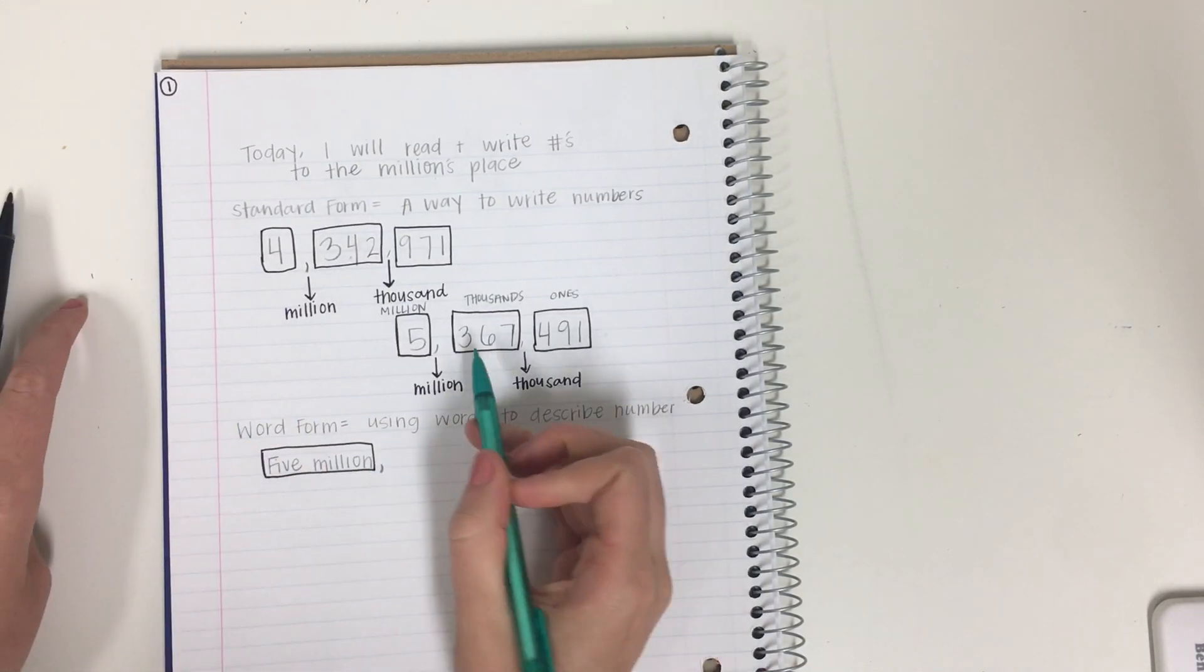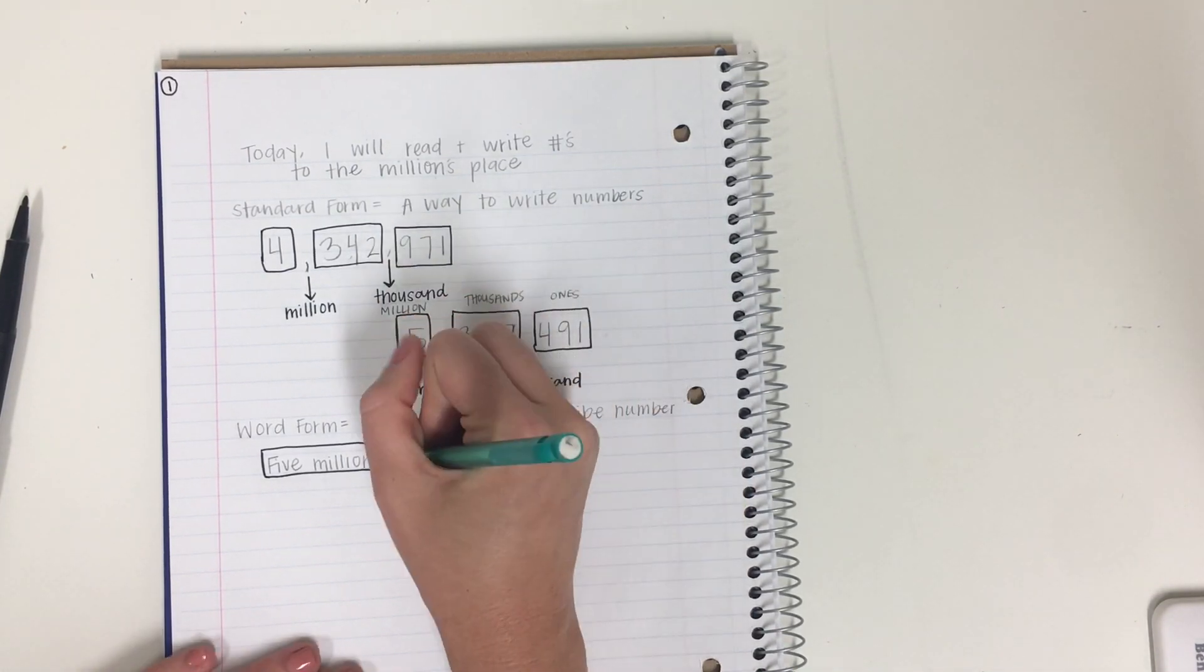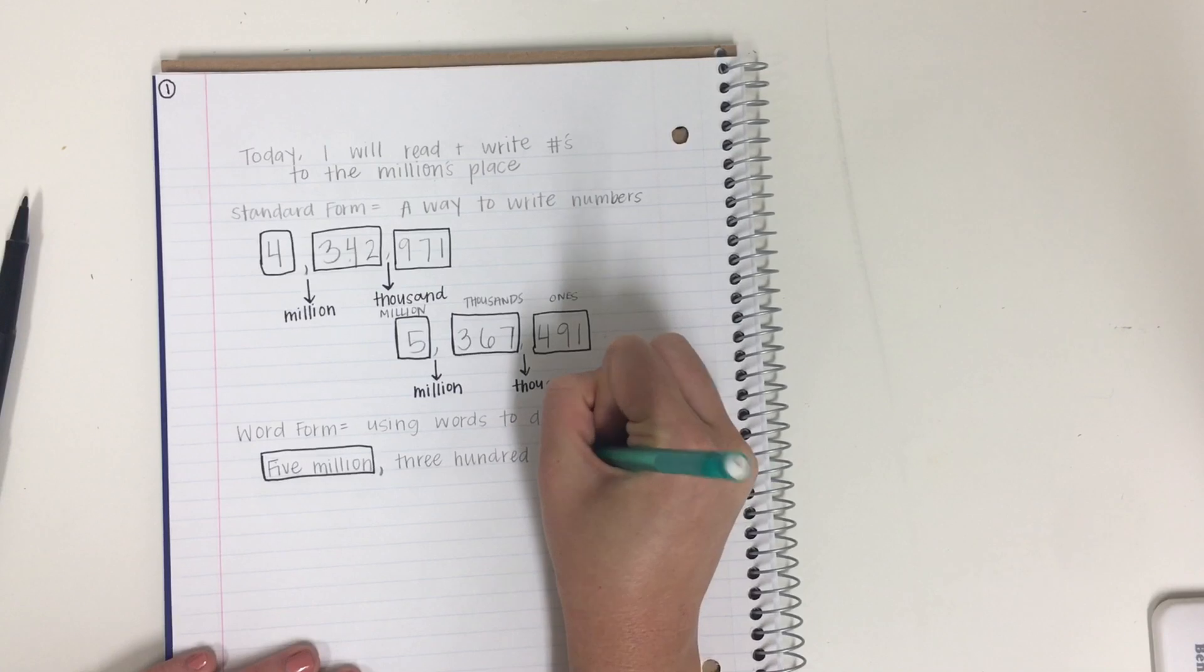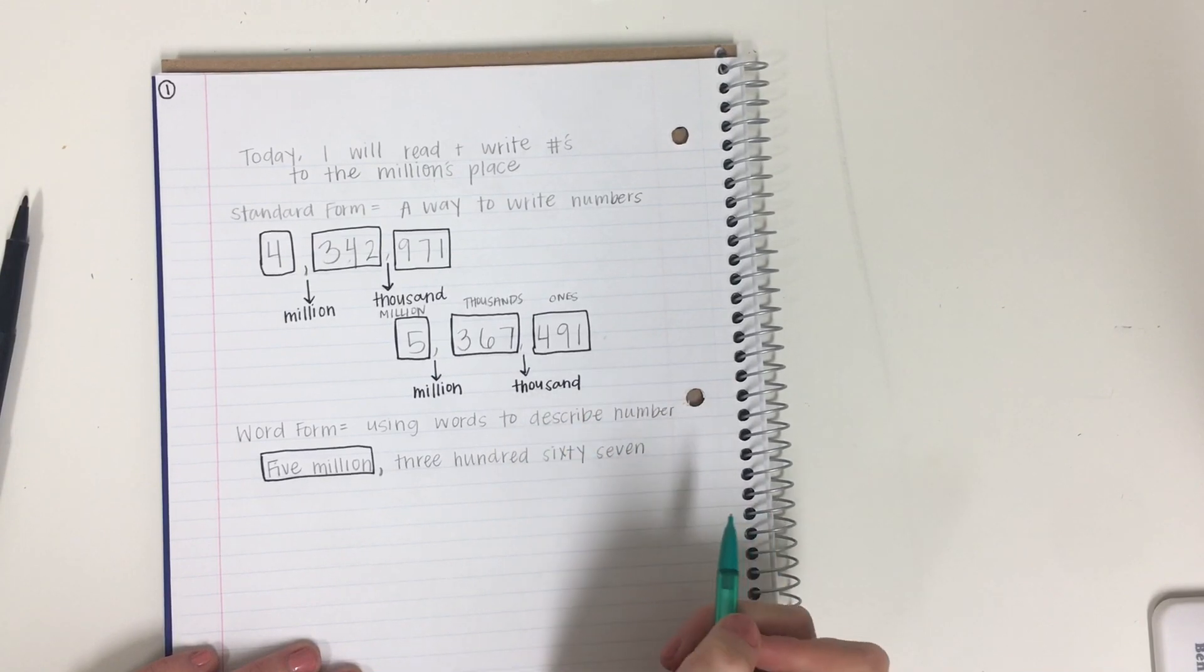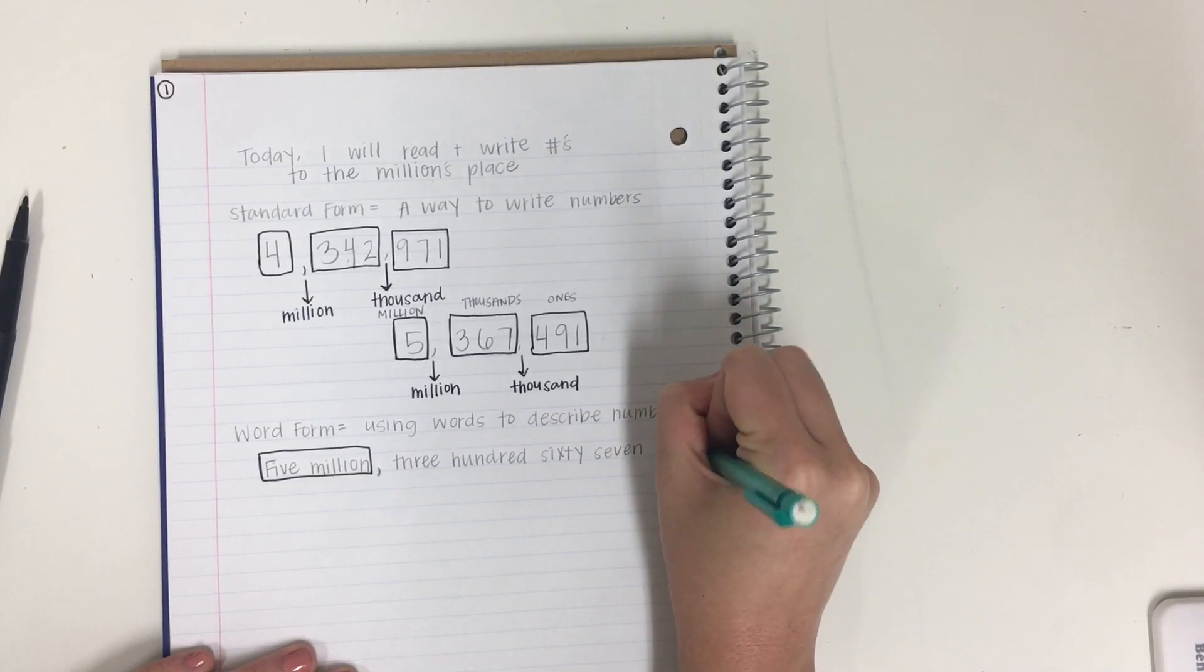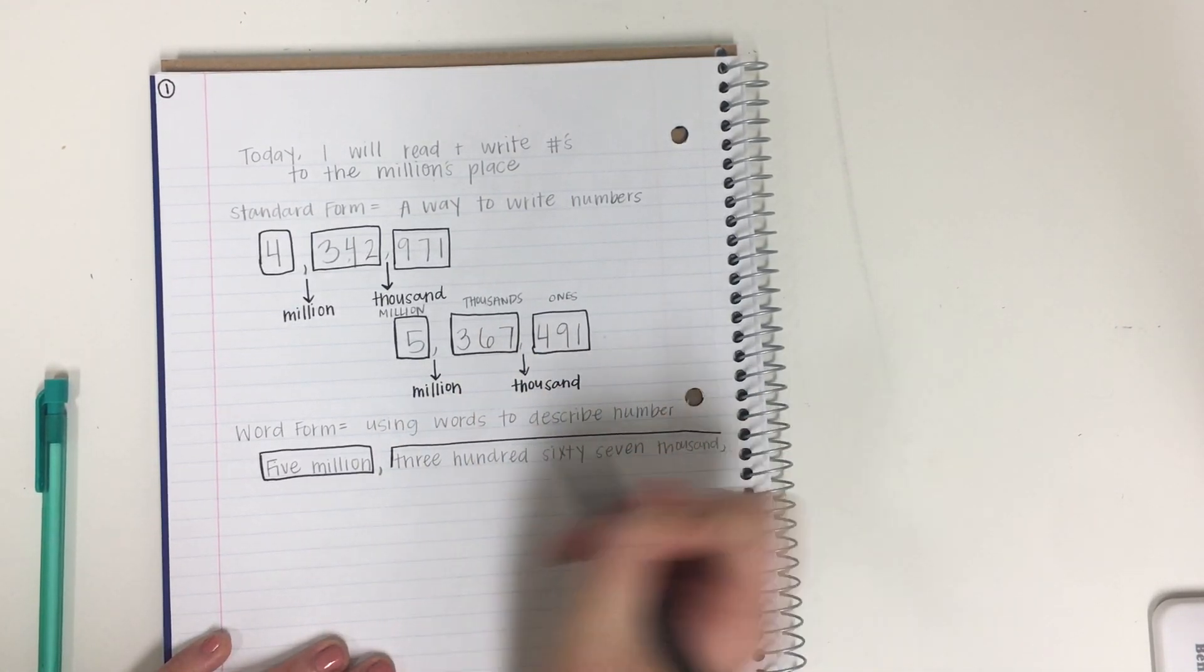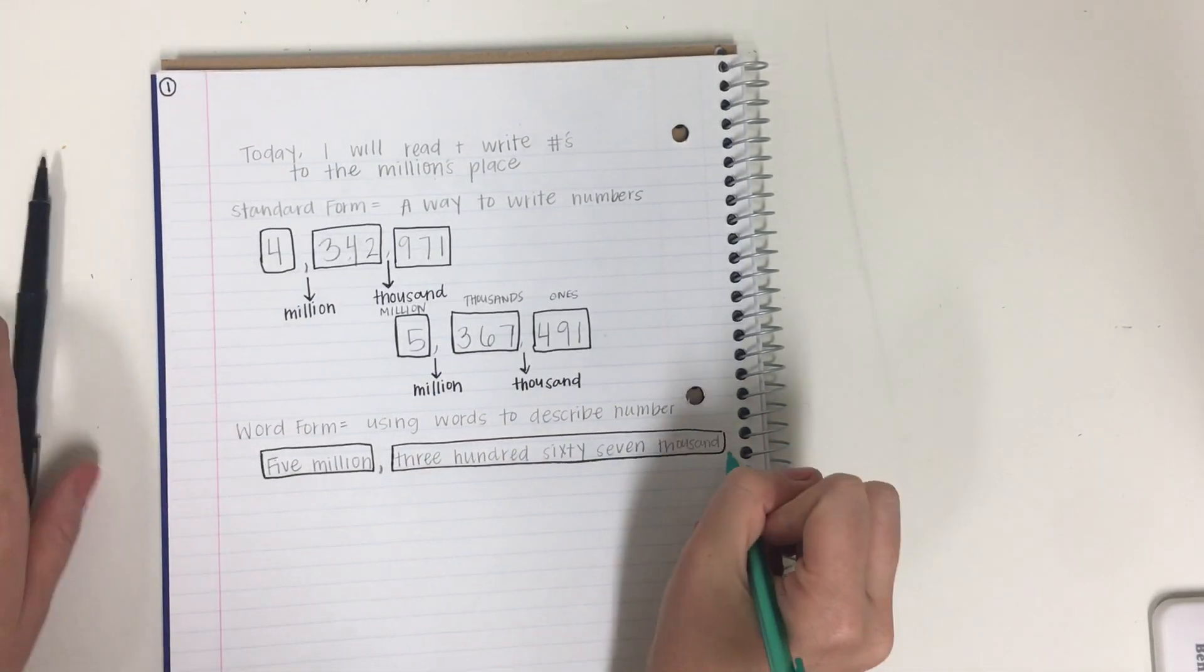Then I'm going to write this number. Three hundred sixty-seven. Just how I say it. Three hundred sixty-seven. So I'm going to write. Three hundred sixty-seven. But you don't want to forget what period it's in. Thousand. So I'm going to squeeze it in. And I'm going to put my comma and re-box this. This is my second box.